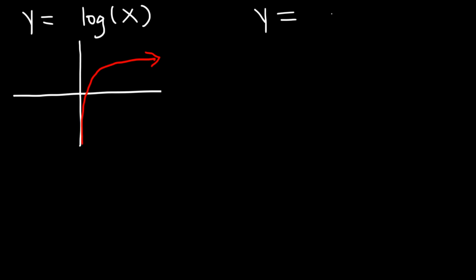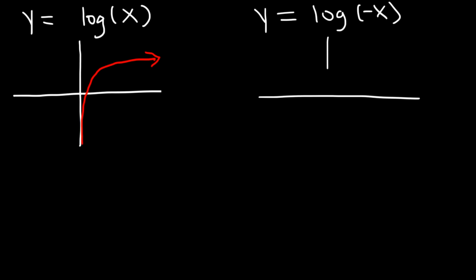Now what is the graph of log of negative x? This graph is going to reflect across the y-axis, so it's going to go towards quadrant 2. In quadrant 2, x is negative and y is positive.